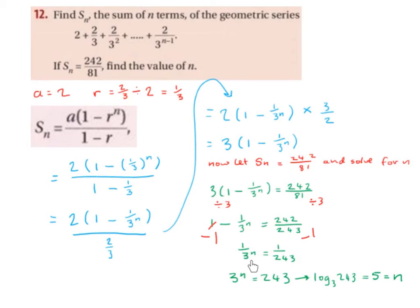Then what we can do is cross multiply and solve for n. So it's going to be 1 multiplied by 243 gives us 243, and 1 multiplied by 3 to the power of n gives us 3 to the power of n. So 3 to the power of n equals 243. So 3 to the power of what gives us 243? We're going to say log base 3 of 243 into the calculator and it will give us 5. So n will be 5. So 3 to the power of 5 will give us 243.